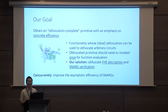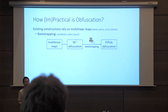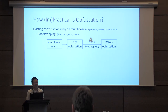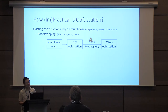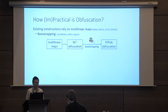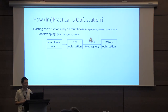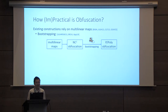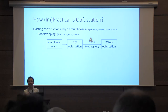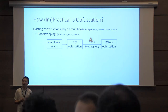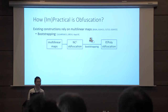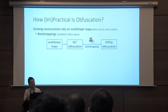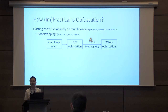Let me give you a sketch of how we build obfuscation for general functionalities. There are three main types of approaches, and all of these constructions rely fundamentally on multilinear maps. The first kind of way of building obfuscation for general circuits relies on a beautiful construction based on bootstrapping, introduced by Garg, Gentry, Halevi, Rakova, Sahai, and Waters in 2013. The starting point is we begin with a multilinear map, and using multilinear maps, we actually build a weak class of obfuscation — namely obfuscation for log depth circuits, for NC1 circuits, or branching programs. Then we can bootstrap NC1 obfuscation to obfuscation for general circuits.